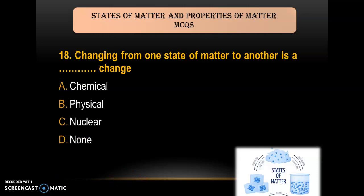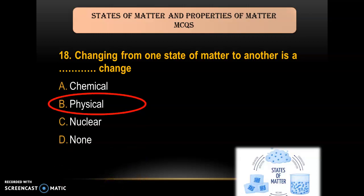Question 18: Changing from one state of matter to another is a ___ change — A) chemical change; B) physical change; C) nuclear change; D) none. As we all know, changing the state of matter is just a physical change — it does not alter its chemical or nuclear nature. So the answer is B — physical change.